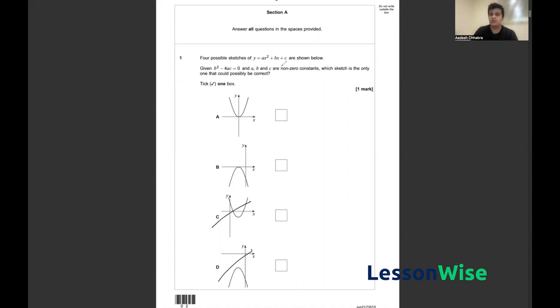Non-zero means that none of them are zero, and that rules out option A. Why? Because in option A, c is in fact zero. How do I know this?